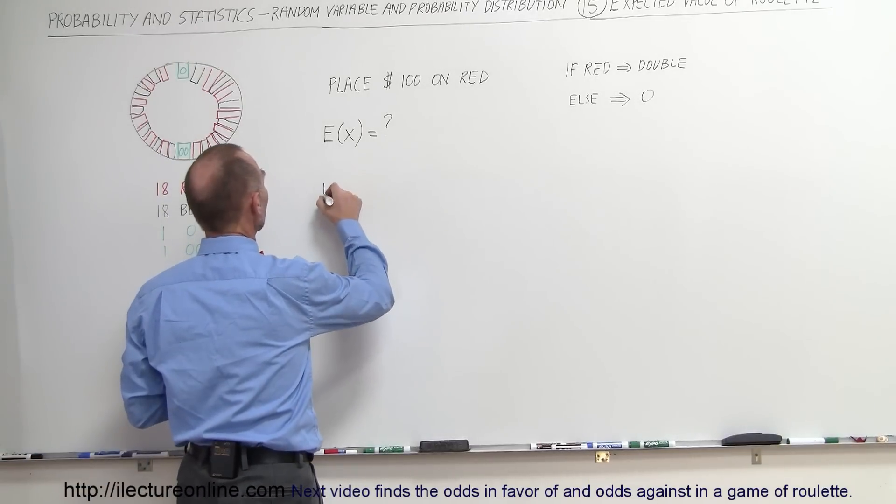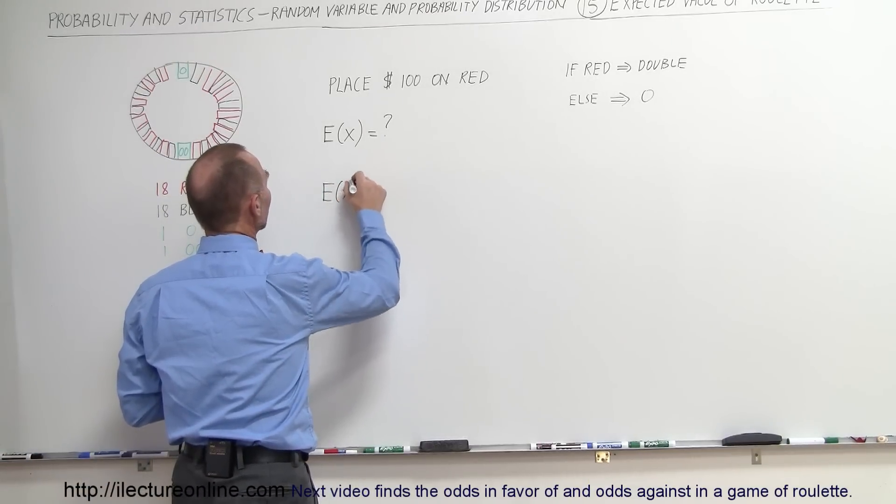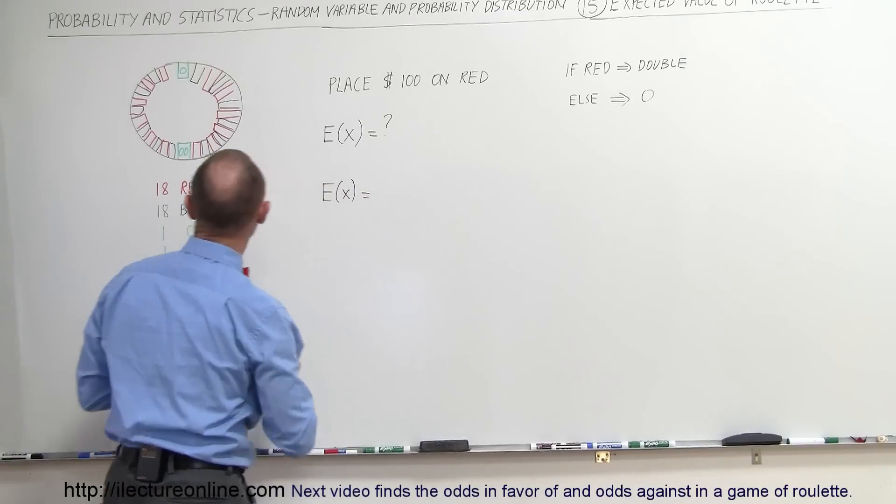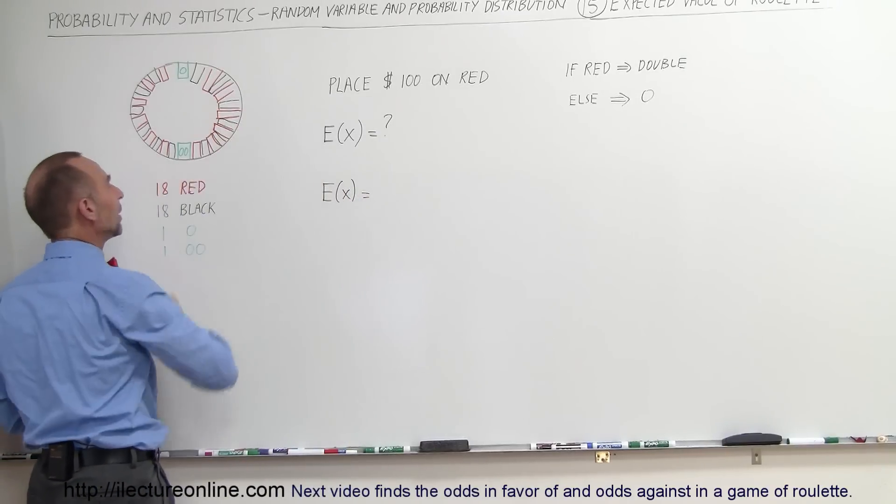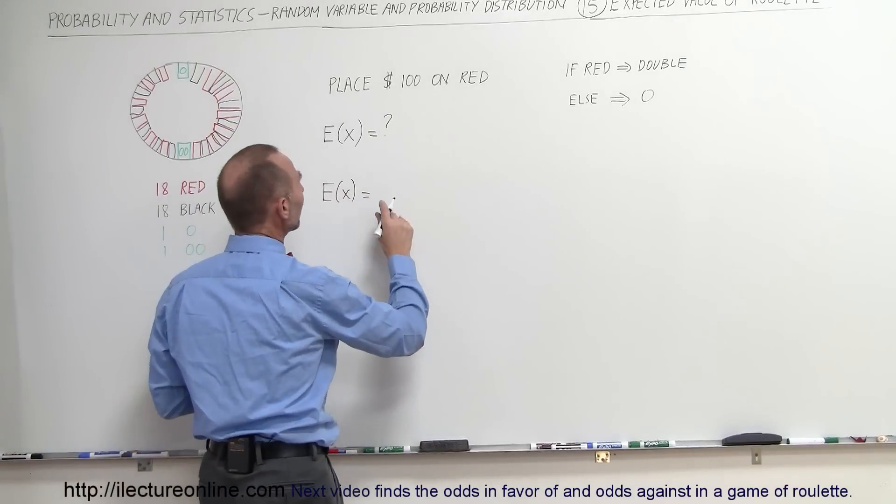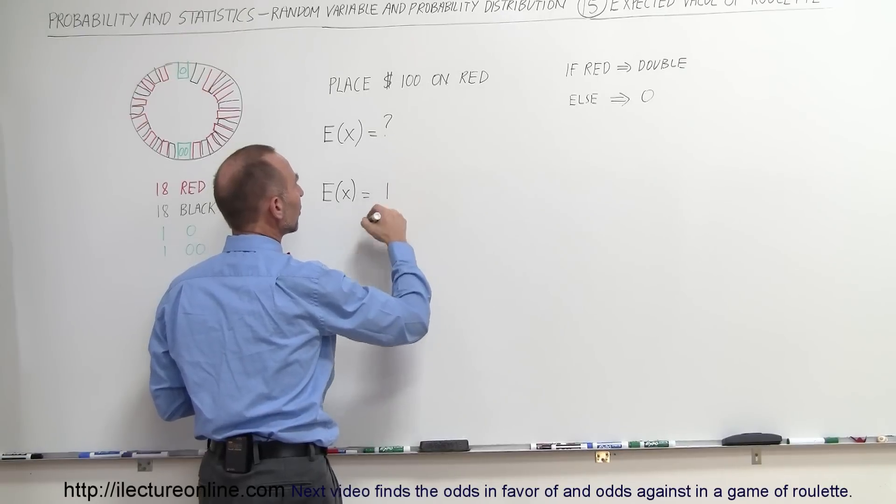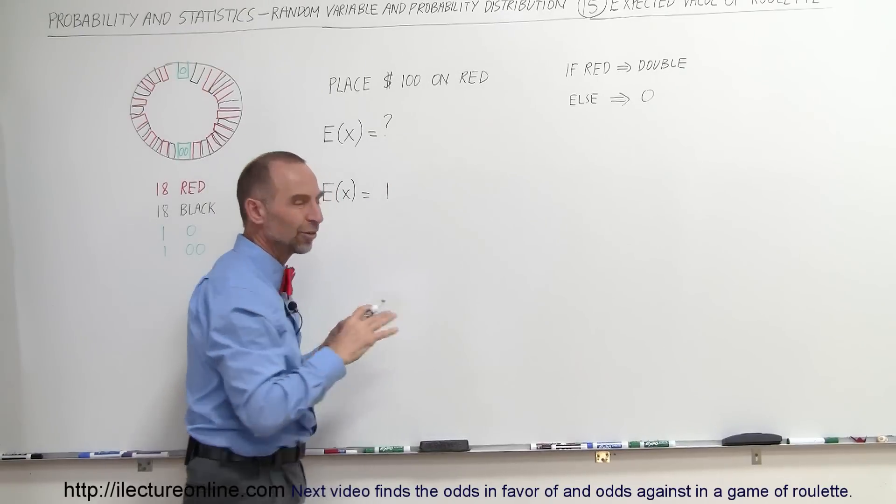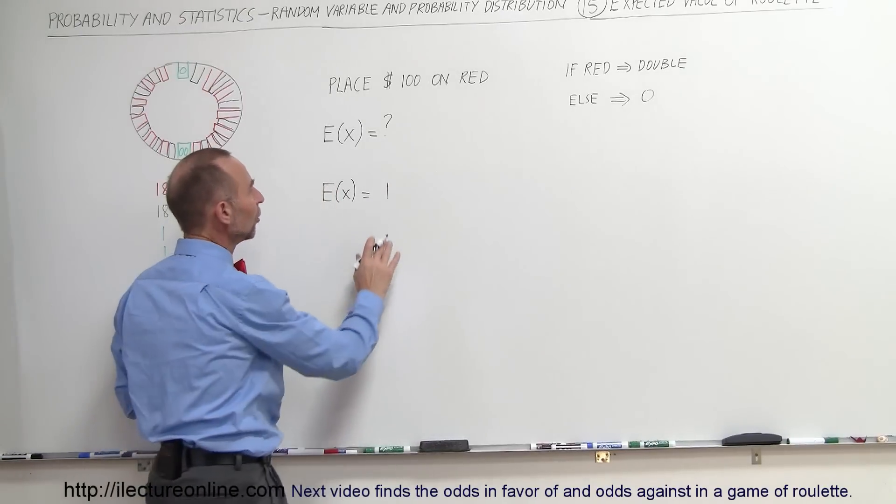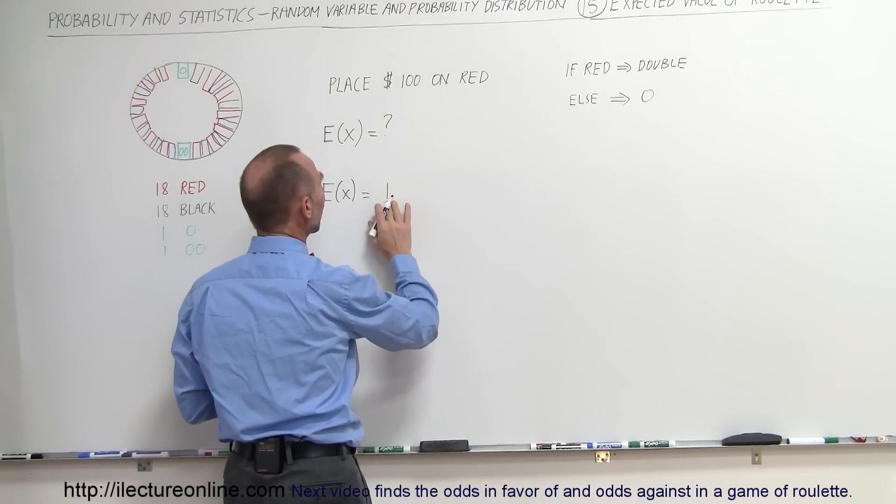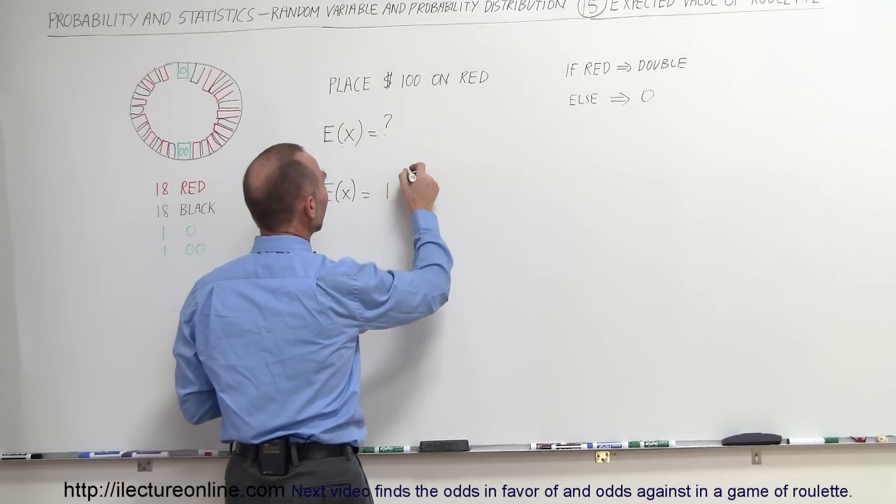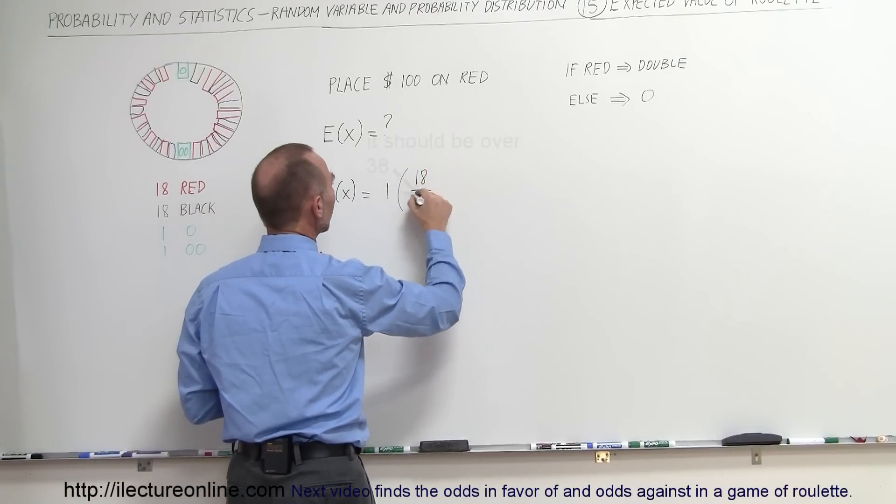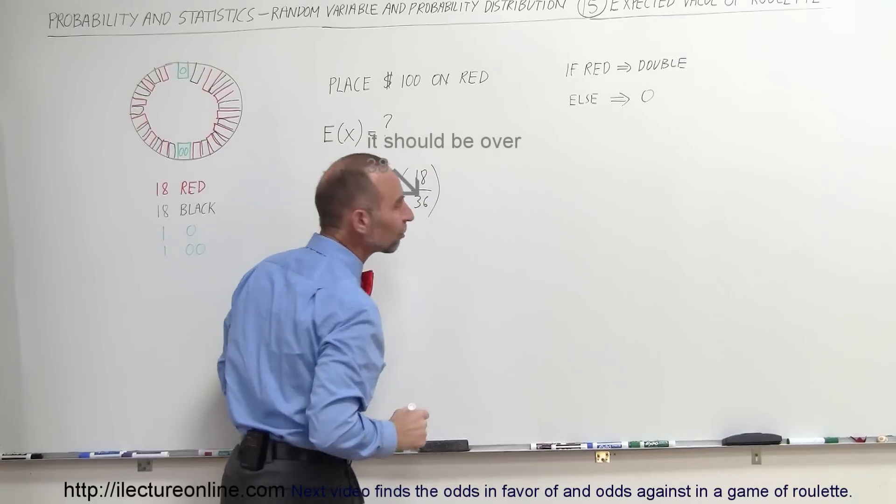Alright, let's try that. So the expected value is going to be equal to, now let's see here there's 18 red possibilities which means you will get $100 or 1 because we're going to scale it down to a single unit. So you get double the money or 1 for every dollar you put down and there's 18 out of a total of 36 possibilities that this will happen.